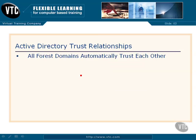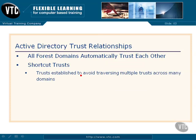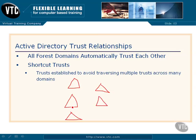Well, first of all, let me reiterate — all of our forest domains automatically trust each other. A shortcut trust is where we may have multiple domains. Let me draw this out. I've got multiple domains arranged in a tree here, and more domains over here in another part of the tree, and we're trying to get from this domain to that one.